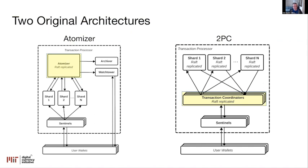Talking about 2PC and the coordinators — this is in some ways the fundamental difference between the two architectures. Unlike the atomizer architecture where there's a single atomizer and every transaction has to go through it, in 2PC we can run multiple transaction coordinators in parallel. Doing this means we can't materialize that same linear global ordering, but it does mean that for any two transactions that are independent, we can process them in parallel, which has significant performance benefits. If you have any questions on any of the technical details, please feel free to reach out — we can cover them in more detail.